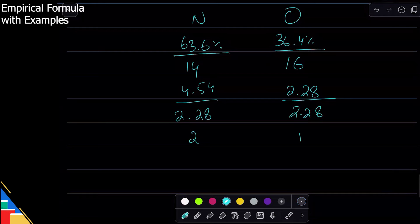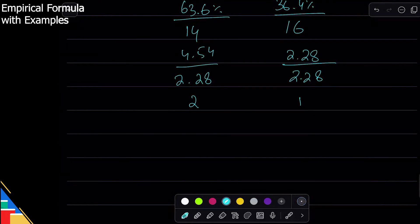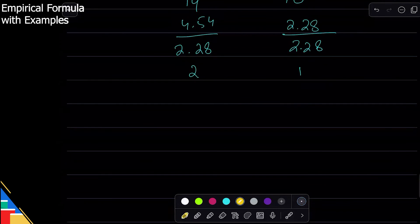Dividing both by 2.28 gives approximately 2 and 1. The calculator gave 1.95 for the nitrogen ratio — you can round that to 2. You would round off when the value is very close to a whole number. You would not round off if you get ratios like 1.5, 1.25, 1.75 — multiples of a half or quarter — because those need to be multiplied up to whole numbers instead.